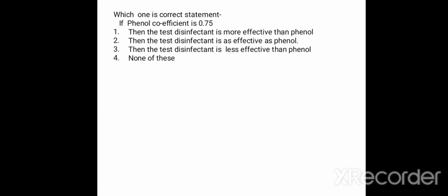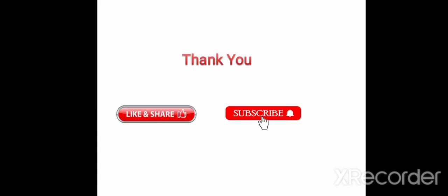Which is the correct statement? If phenol coefficient is 0.75 — Option 1: the test disinfectant is more effective than phenol. Option 2: the test disinfectant is less effective than phenol. Option 3: the test disinfectant is as effective as phenol. Option 4: none of these. The correct answer is Option 2 — the test disinfectant is less effective than phenol. Thank you. Please like, share, and subscribe to this channel.